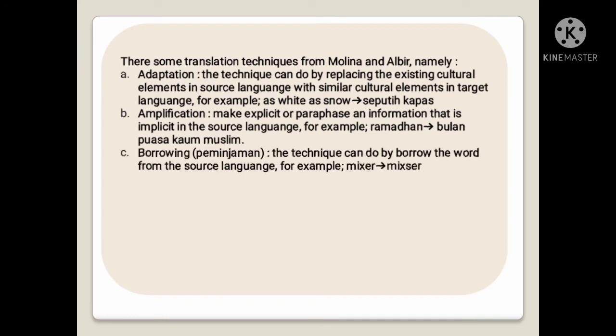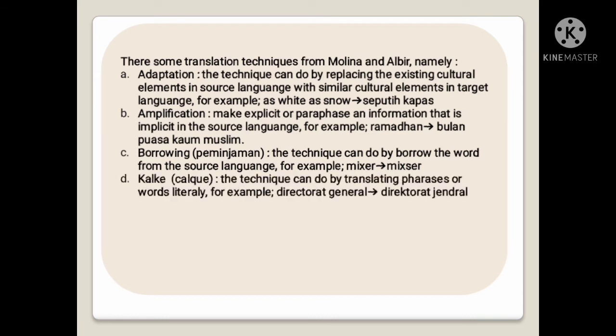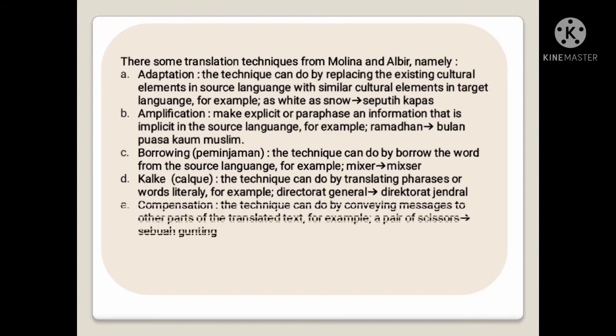Next is borrowing (peminjaman) — borrowing the word directly from the source language. For example, 'mixer' remains 'mixer.' Then there is calque — translating a phrase word for word. For example, 'directorial general' becomes 'direktorat general.' Next is compensation — conveying a message by shifting it to other parts of the translated text. For example, 'a pair of scissors' becomes 'sebuah gunting.'